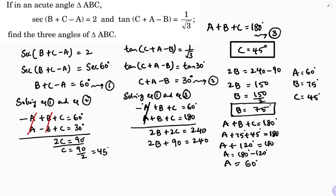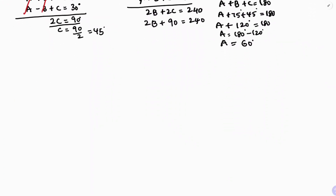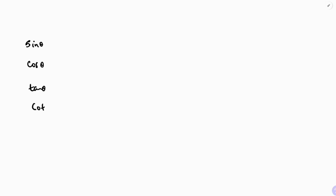Now I will explain the trigonometric table — how I got all these values for sec theta and tan theta. I will take all six ratios: sine theta, cos theta, tan theta, cot theta, sec theta, and cosec theta, with standard angle values 0 degrees, 30, 45, 60, and 90 degrees.